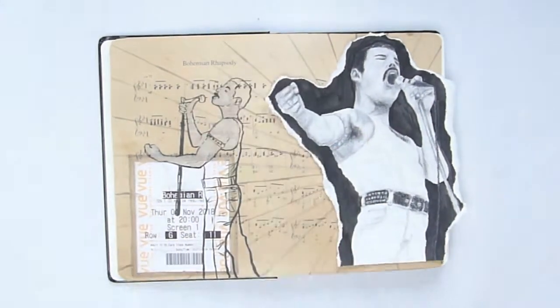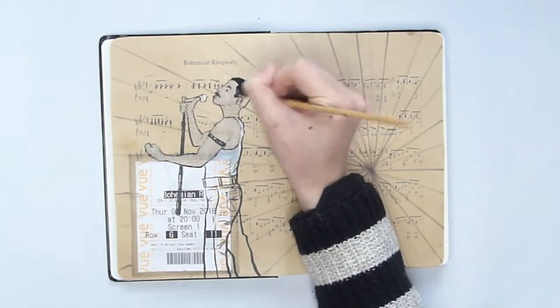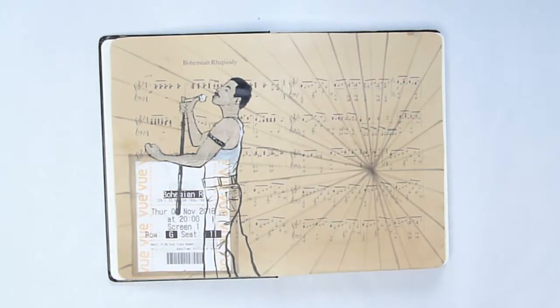The last and final thing I needed to do was to secure my pencil portrait here, which was another thing I just did with glue.